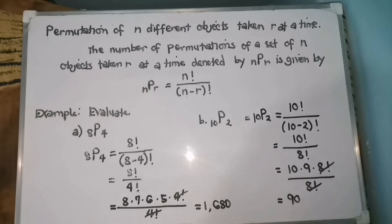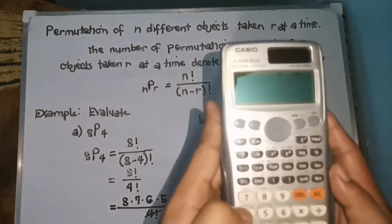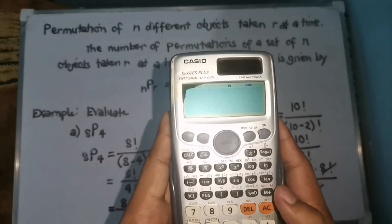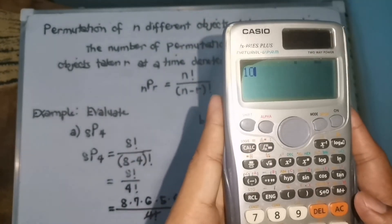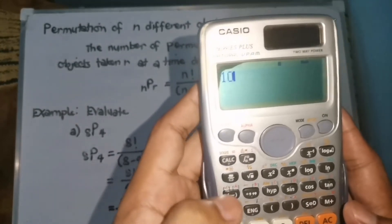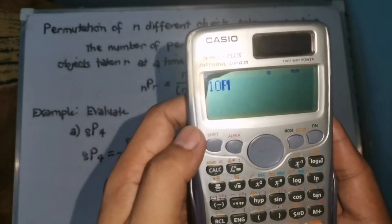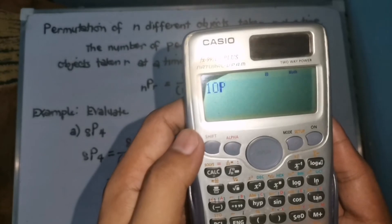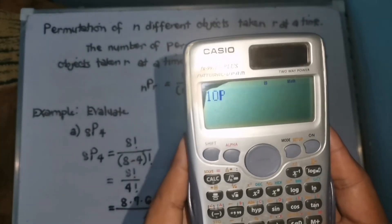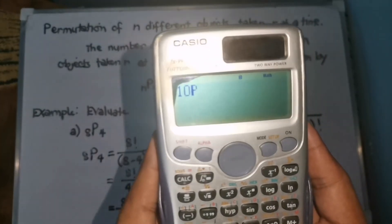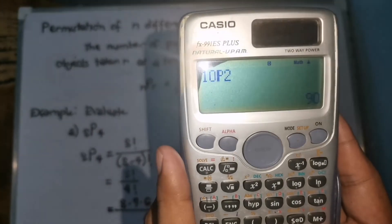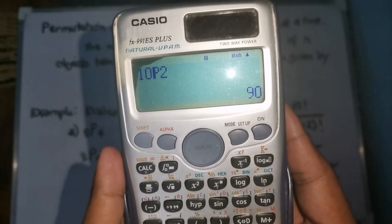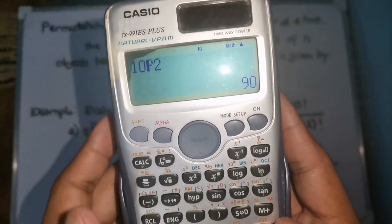Let us check using the calculator. Enter 10, then Shift NPR, then 2, and press equals. Our answer is confirmed as 90.